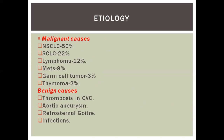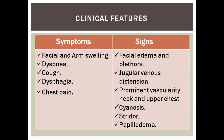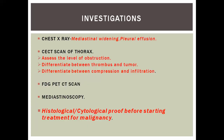Around 95% of SVCO causes are malignant: NSCLC, SCLC, lymphoma, and thymoma. Benign causes include thrombosis, aneurysm, retrosternal goiter, and infections. Clinical features: facial and arm swelling, dyspnea, dysphagia — mostly due to the primary malignancy. Signs include facial plethora, jugular venous distension, venous prominence, cyanosis, and stridor. Chest X-ray shows mediastinal widening and pleural effusion. CT thorax assesses the level of obstruction, differentiates between thrombus and tumor, and between compression and infiltration. FDG PET is routinely required for lung and lymphoma cases. Histological or cytological proof is mandatory before starting treatment for malignancy.